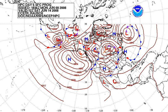Measurements of barometric pressure and the pressure tendency have been used in forecasting since the late 19th century. The larger the change in pressure, especially if more than 3.5 hectopascals (2.6 mmHg), the larger the change in weather can be expected. If the pressure drop is rapid, a low-pressure system is approaching, and there is a greater chance of rain. Rapid pressure rises are associated with improving weather conditions, such as clearing skies.